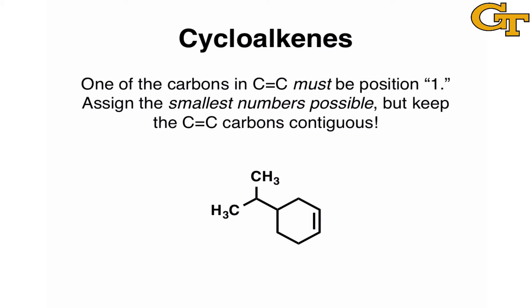Cycloalkenes are cyclic structures that contain a carbon-carbon double bond within the ring. The most important rule to remember is that one of the carbons in the C=C double bond must be position one. Assign the smallest numbers possible when numbering, but be sure to keep the carbons of the double bond contiguous. For example, in the compound you see here, the temptation might be to start numbering so that the isopropyl group — two methyls bound to a central CH — gets position three. The problem with that is we end up with a double bond that spans carbons one and six, which is contrary to the convention. The convention stipulates that carbons of a double or triple bond need to have numbers that are right next to each other.